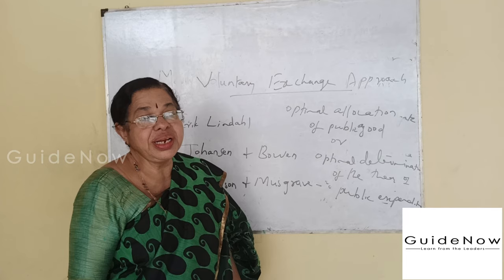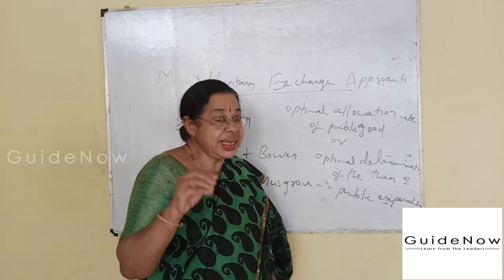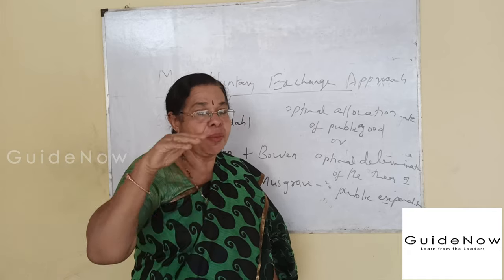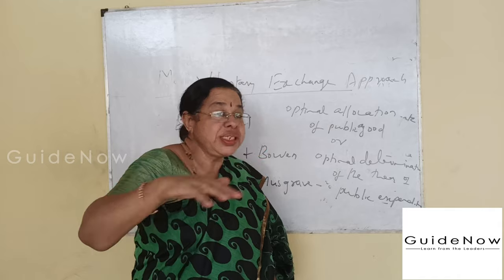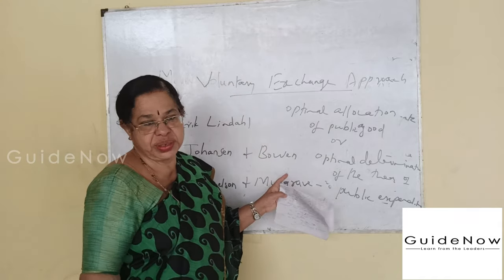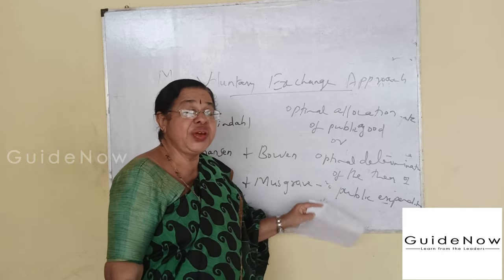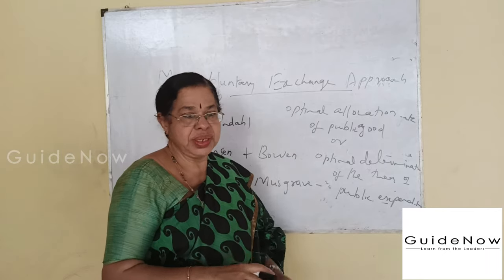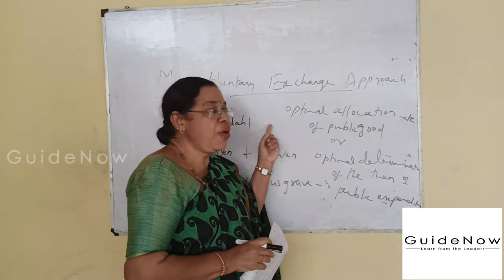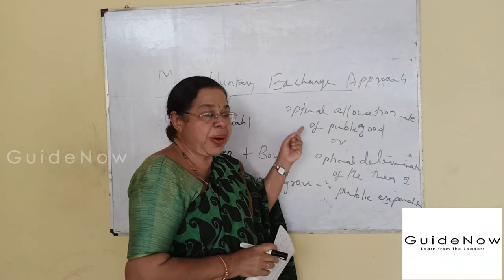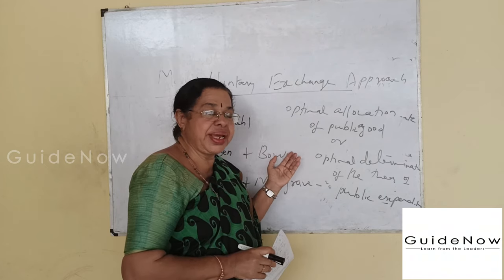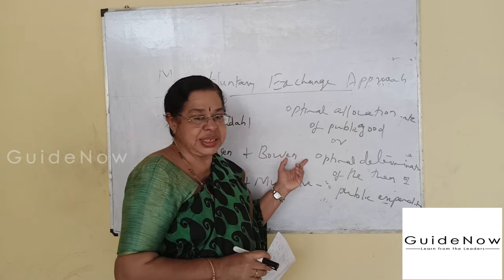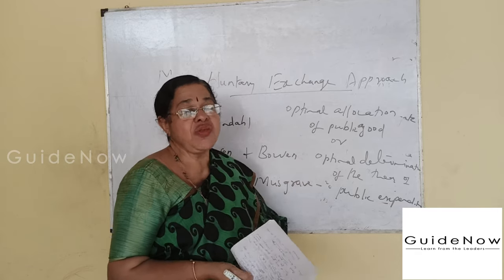In the case of private goods, provision is based on the price system or price mechanism. However, it is very difficult to determine how to distribute or provide public goods in the same way. Private goods are sold with the help of the price mechanism or market mechanism, but such a pricing system is not possible in the case of the provision of public goods.